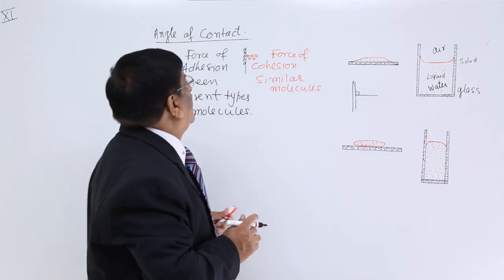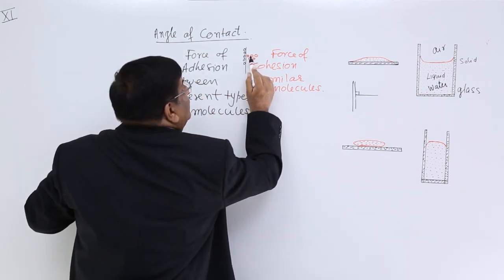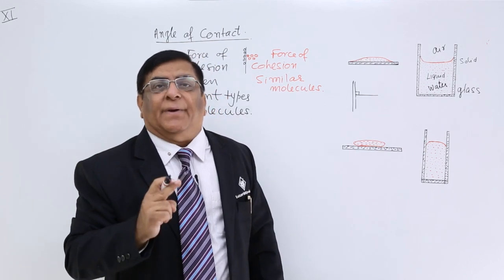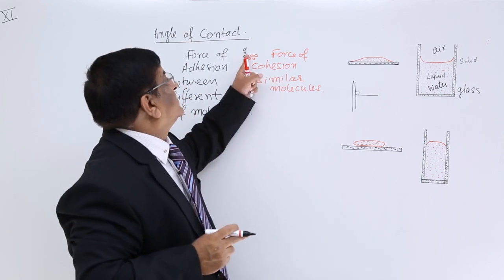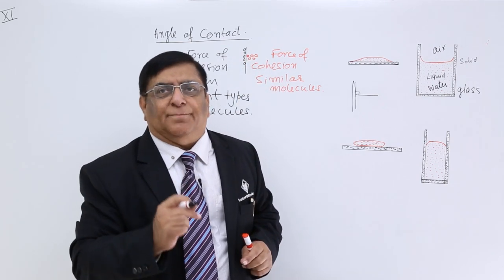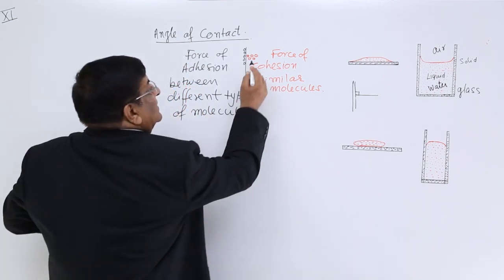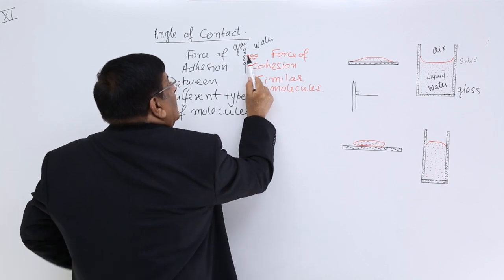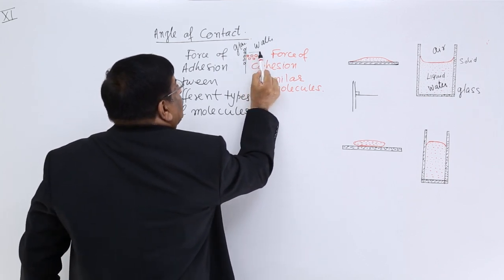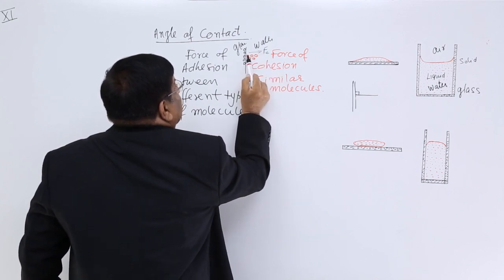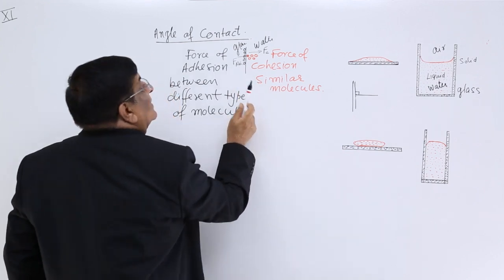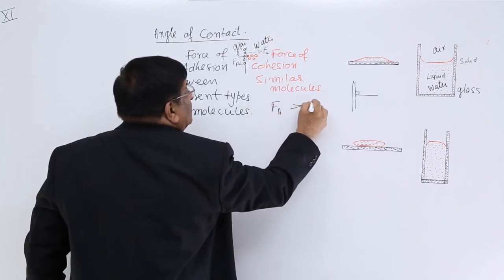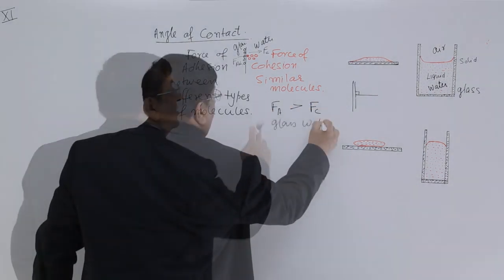This molecule is attracted by both the force of cohesion and the force of adhesion. In some pairs, the force of cohesion is larger than adhesion, and in some pairs, adhesion is larger than cohesion. For the glass-water pair, the force of adhesion is larger than the force of cohesion. This molecule is attracted more by the glass molecule, so the force of adhesion dominates.